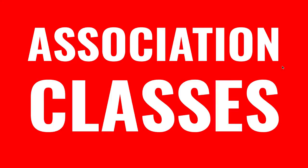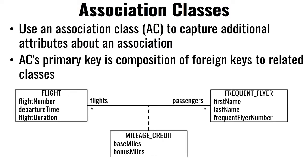Let's talk about association classes. Association classes are more or less what we already saw when we talked about mapping tables, where you have a many-to-many and we reified it — we replace the many-to-many with two one-to-many's. That new class we implemented, we did it because there's no way to implement a many-to-many in a relational database. We have to have a new table, and that new table had foreign keys back to the original tables.